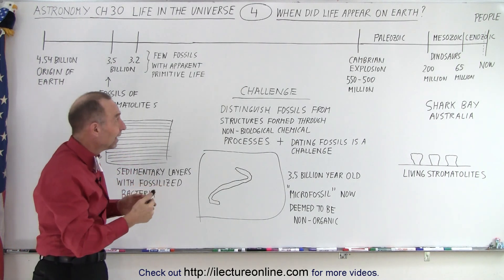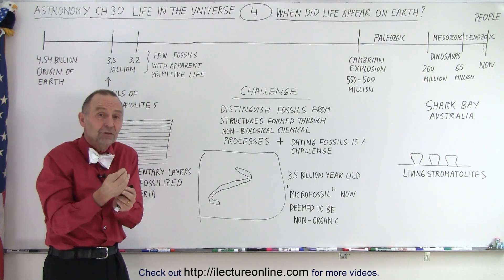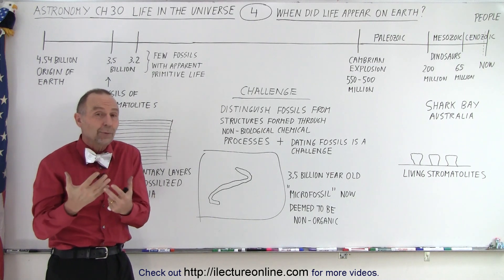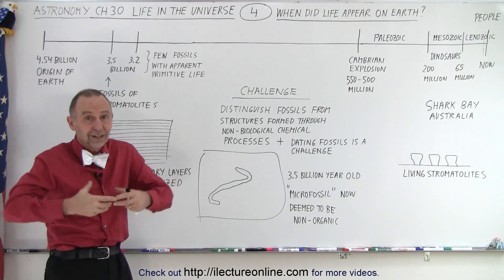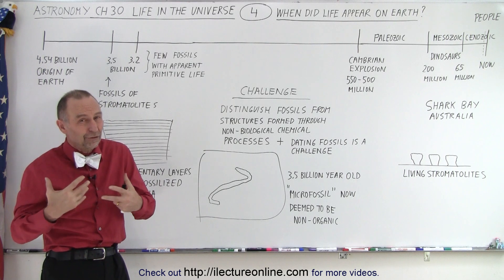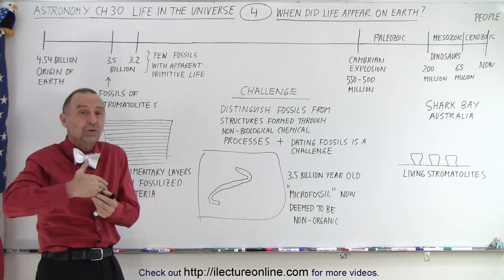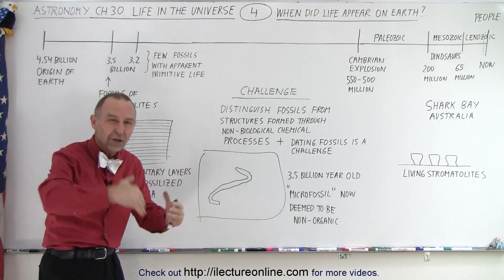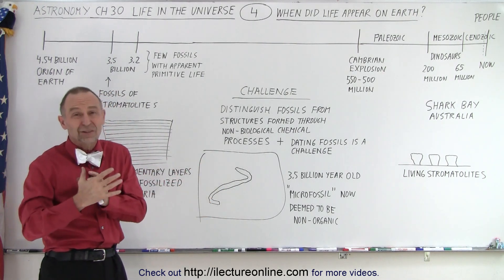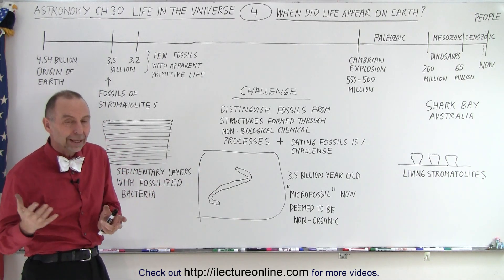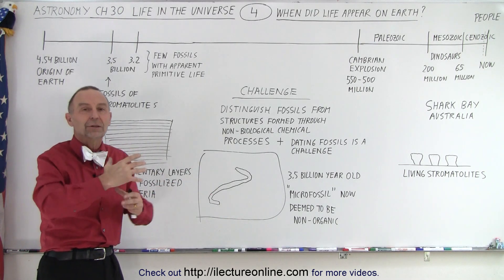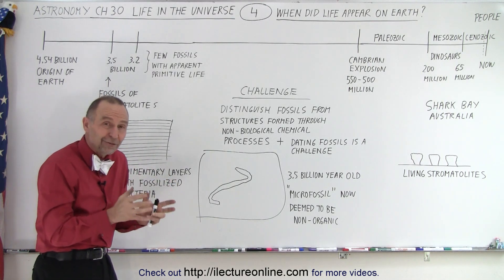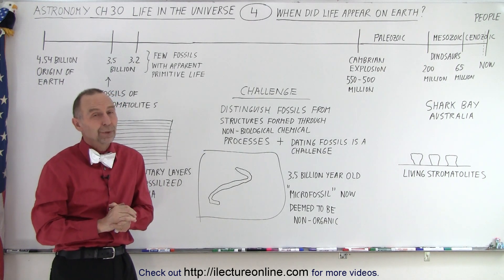The reason is that in order for us to find evidence — fossilized life — all the way back to three and a half billion years, the rocks that were formed there that contained that fossilized life still have to exist. And the Earth is a very living planet, meaning it goes through enormous geological changes: volcanic eruptions, tectonic plate movements, subduction, weathering, rivers, rains, snow. Things have simply disappeared and new rocks have formed.